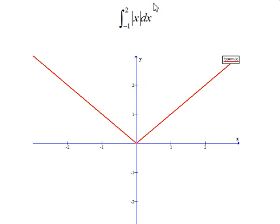So here's the definite integral we want to calculate from negative 1 to 2 of the absolute value of x. So graphically, first thing we'll do is we'll draw in our limits. We're going to have 1 at negative 1 and 1 at 2.